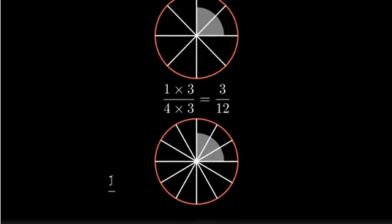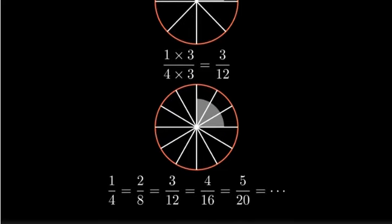We can continue this pattern. By multiplying by four, we get four-sixteenths. By multiplying by five, we get five-twentieths. And so on.